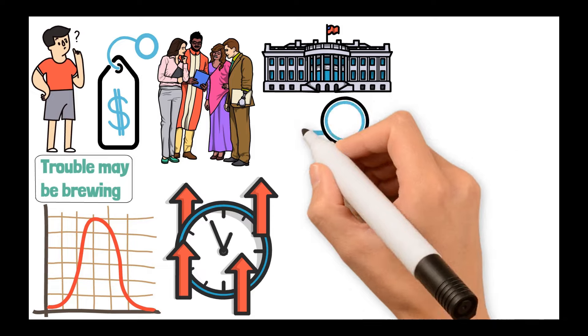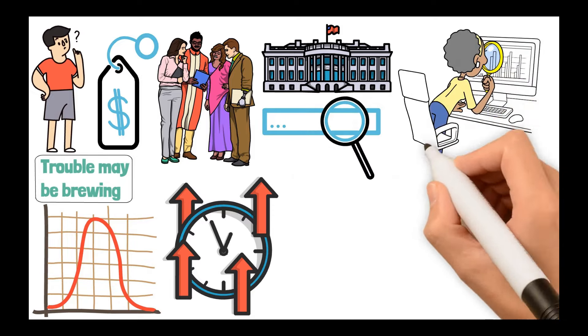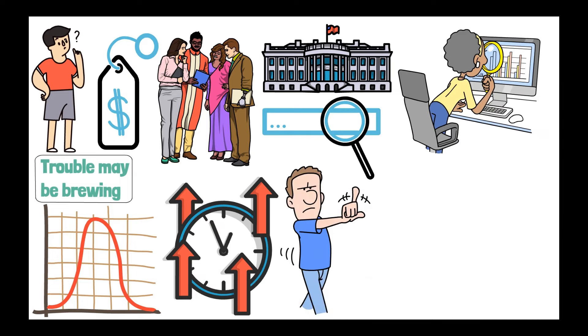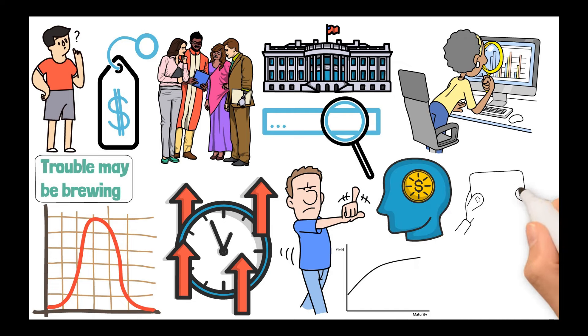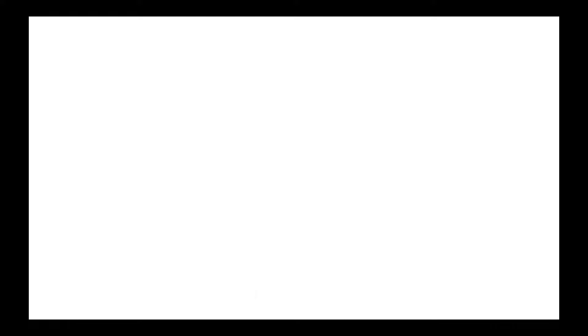Yield curve rates are published on the U.S. Department of the Treasury's website each trading day. So, you can actually check out this financial forecast for yourself. But wait, there's more. So, investors use this yield curve to make predictions about the economy to inform their investment decisions.